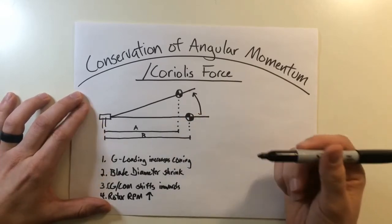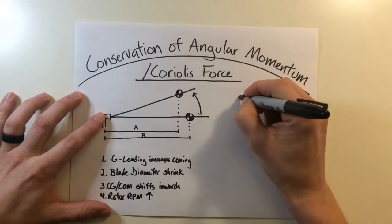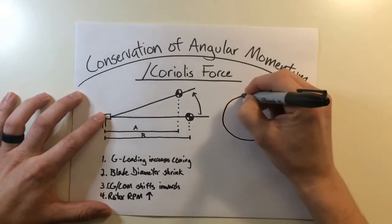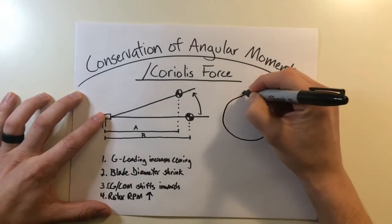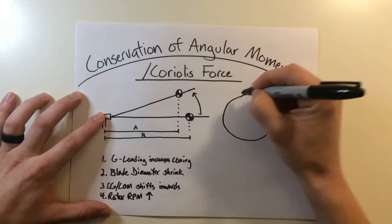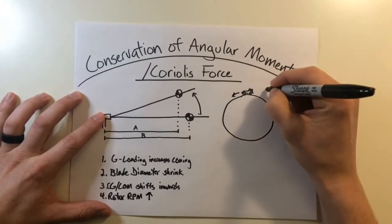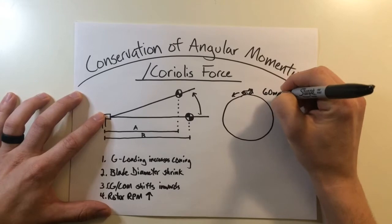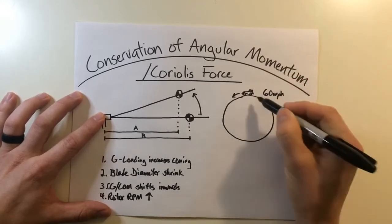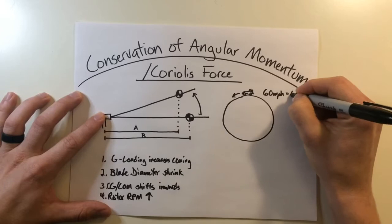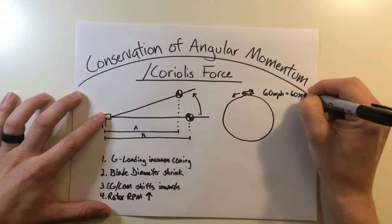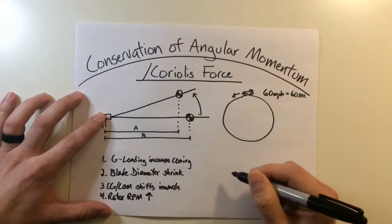Another way to think about this is imagine a race car going around a track. So if we have a track right here, we have a race car, and he's going this way around the track at 60 miles per hour. Let's say this track is one mile, so at 60 miles an hour, he can make one revolution or one RPM in 60 seconds.